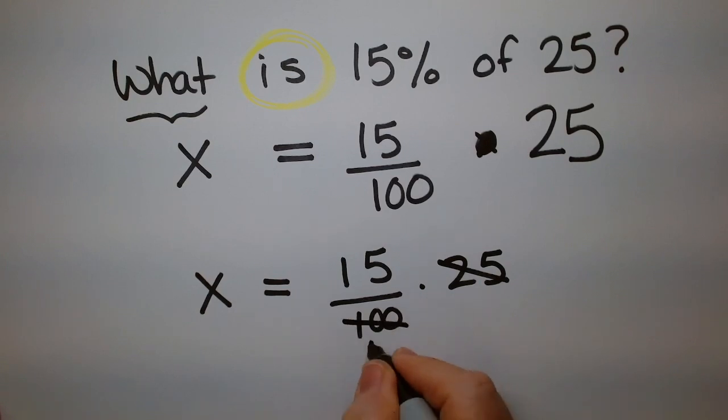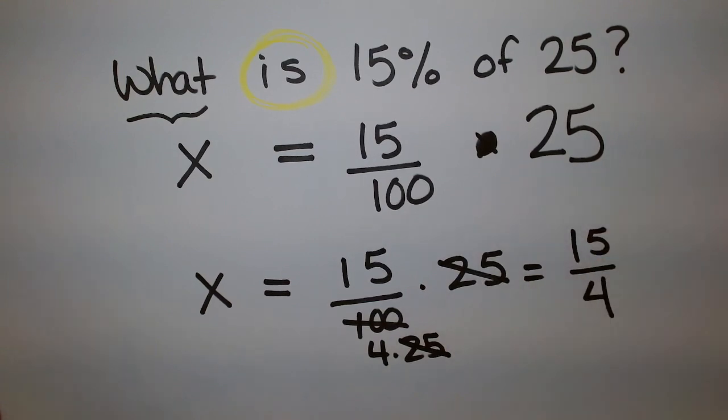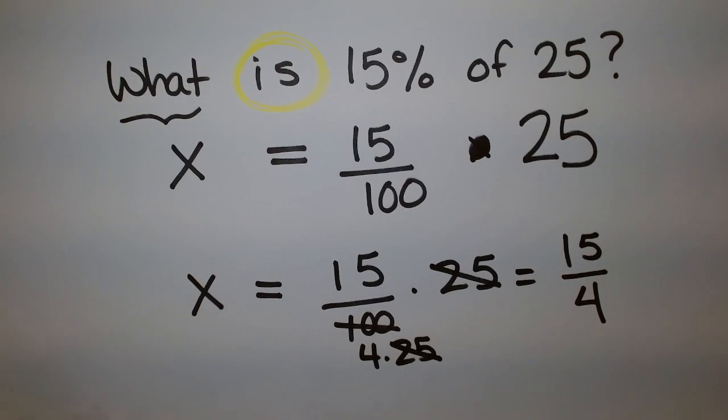25, this is 4 times 25, and so the 25s cancel out. And so I have 15 over 4. And that's my answer. And you can write it in decimal form if you like.